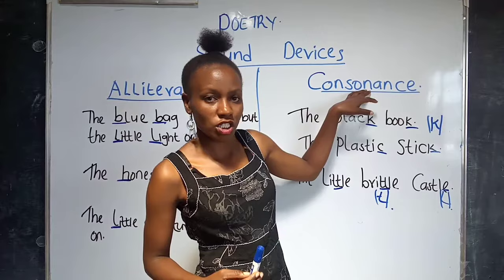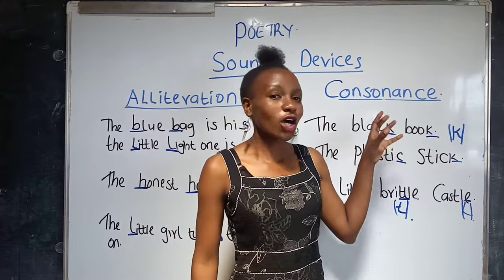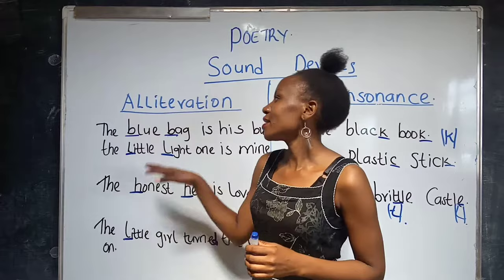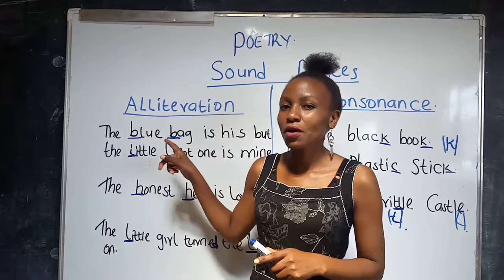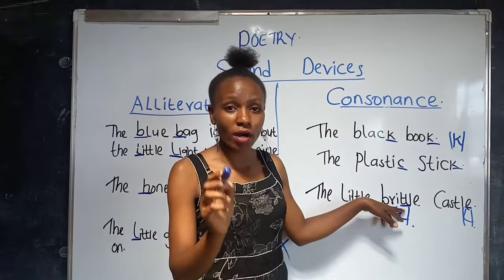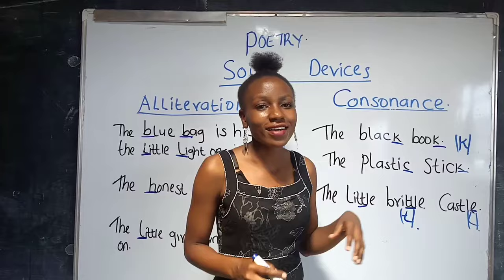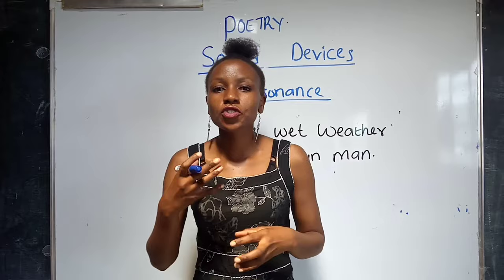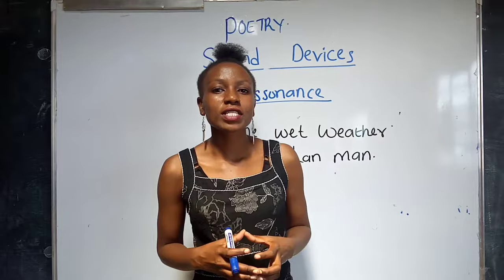Have a look at the distinction between alliteration and consonance. The similarity is that both involve the repetition of consonant sounds. The difference is: in alliteration we focus on the initial consonant sound in words which follow each other closely, but in consonance we focus on the consonant sound in the middle or at the end of words that follow each other closely. Don't confuse between the two.